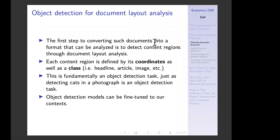The exact same object detection models used for those problems can be fine-tuned to our context and used on documents. If you just take a model trained to detect objects in iPhone photos and apply it to these documents, you'll get disappointing performance. But the model has already been pre-trained to detect objects and is in the right vicinity of where you need to be — you'll need to do additional labeling to fine-tune. We're going to spend a fair amount of time talking about object detection models.